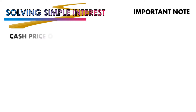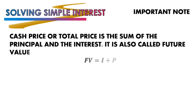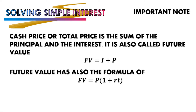Lastly, you need to know that the cash price or total price is the sum of the principal and the interest. This is also called the future value: FV = I + P. There is also another formula: FV = P(1 + RT). You can use either formula depending on the situation of the problem. Later on you will learn how to choose the right formula.